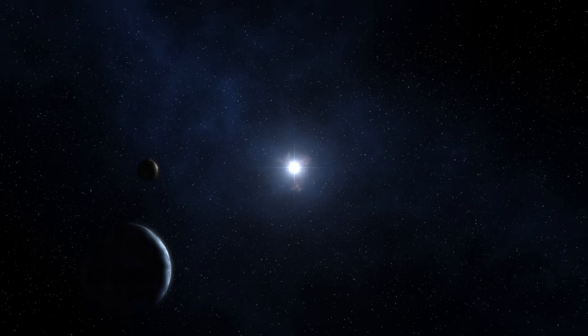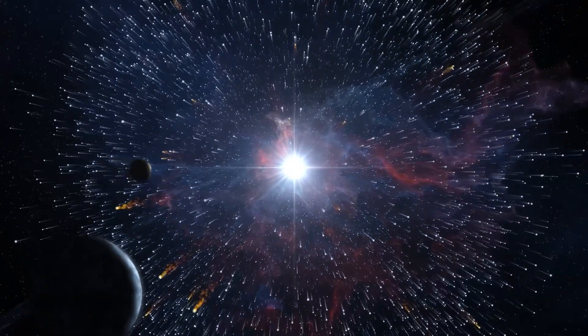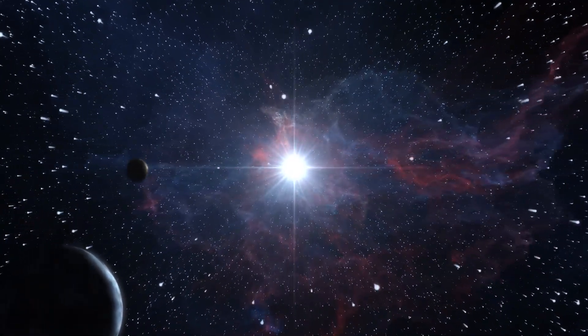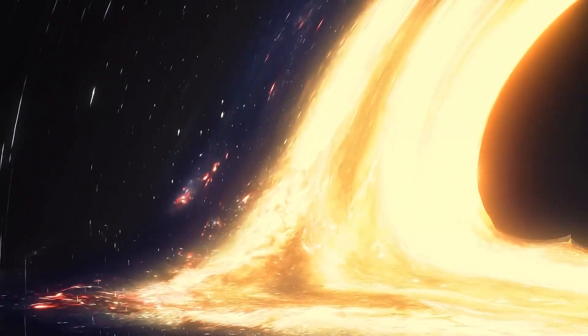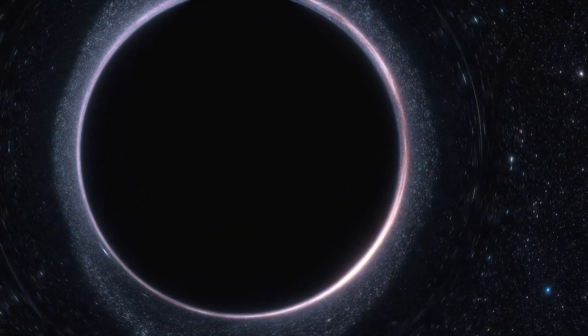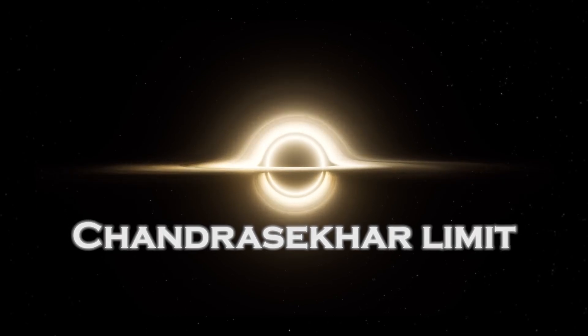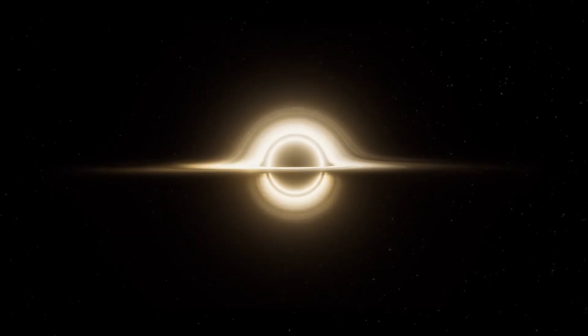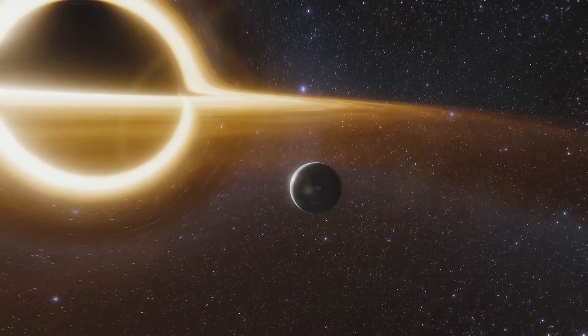When a star exhausts its nuclear fuel and undergoes a supernova explosion, its core collapses under the force of gravity. If the remaining mass exceeds a critical limit, known as the Chandrasekhar limit, the gravitational collapse becomes irreversible, leading to the formation of a black hole.